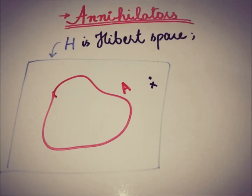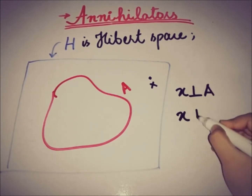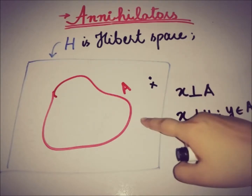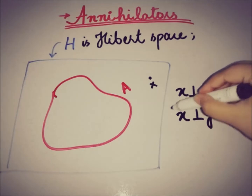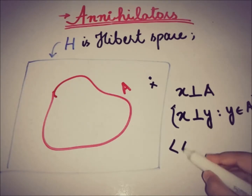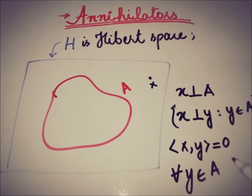We say that X is orthogonal to A if X is orthogonal to every element of A. Equivalently, since H is a Hilbert space, X is orthogonal to A if the inner product of X with every y in A equals zero — that is, the norm is equal to zero for all y belonging to A.